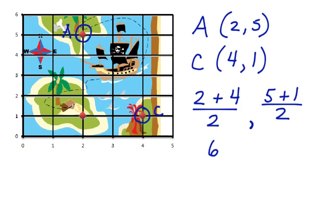2 plus 4 is 6, divided by 2. 5 plus 1 is 6, divided by 2. When we simplify, we can say the midpoint is at 3, 3.